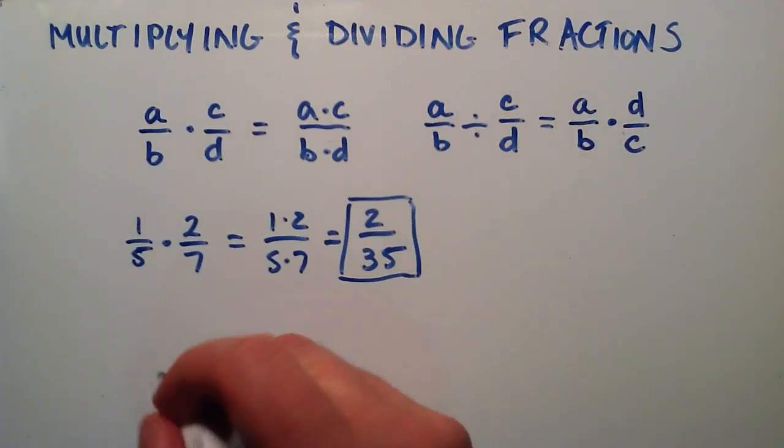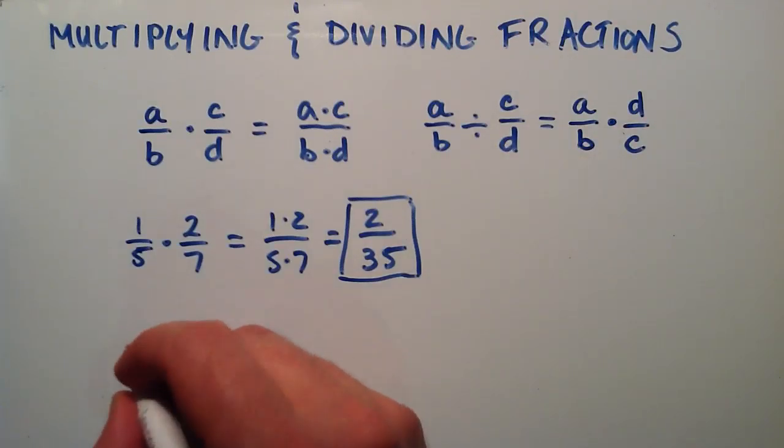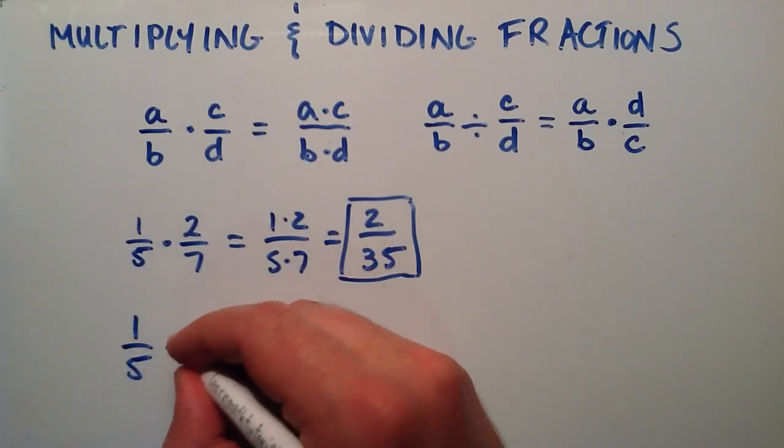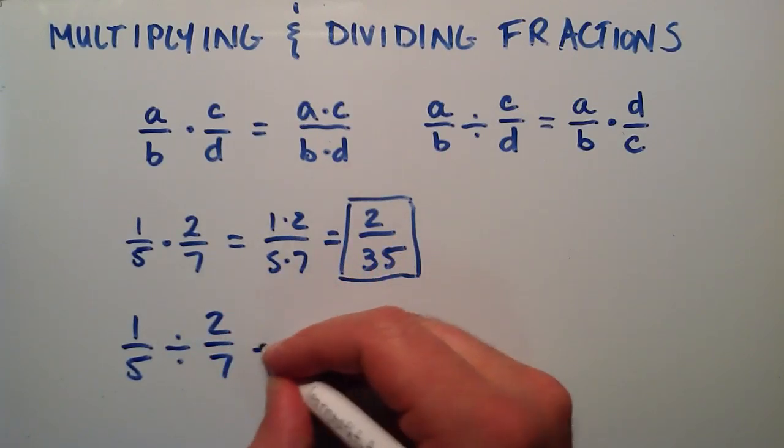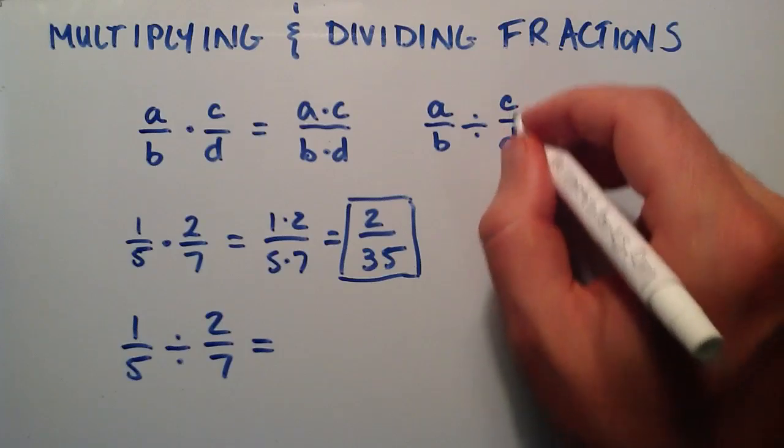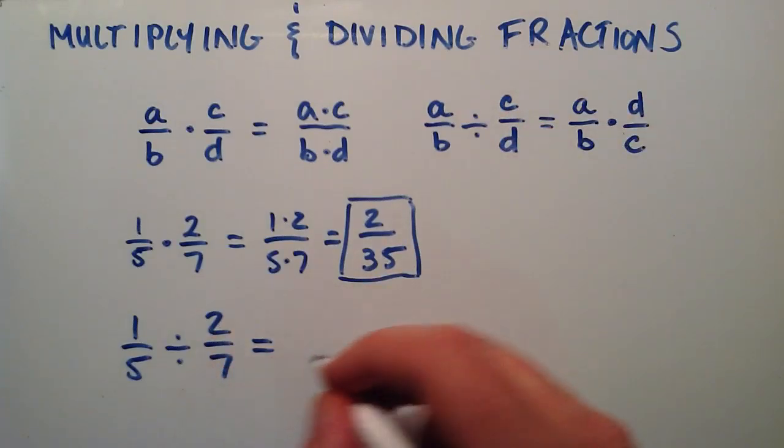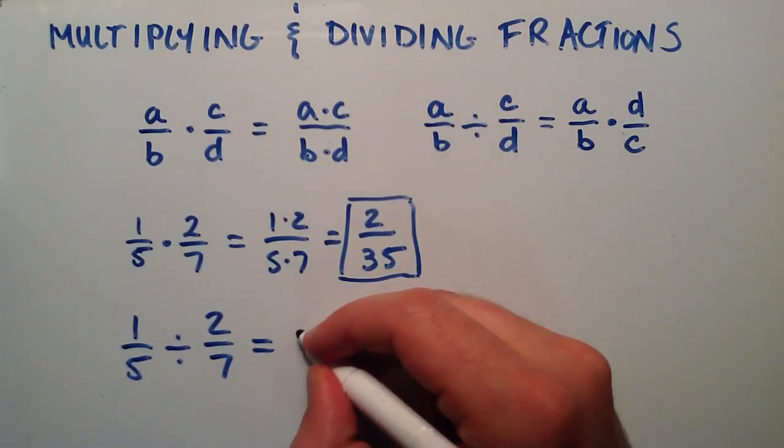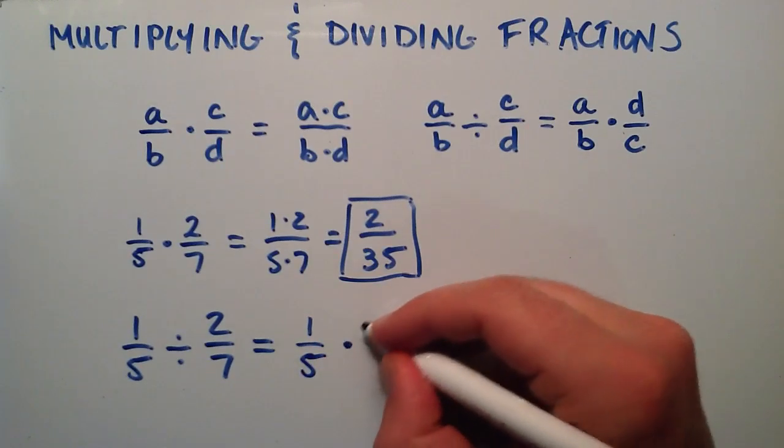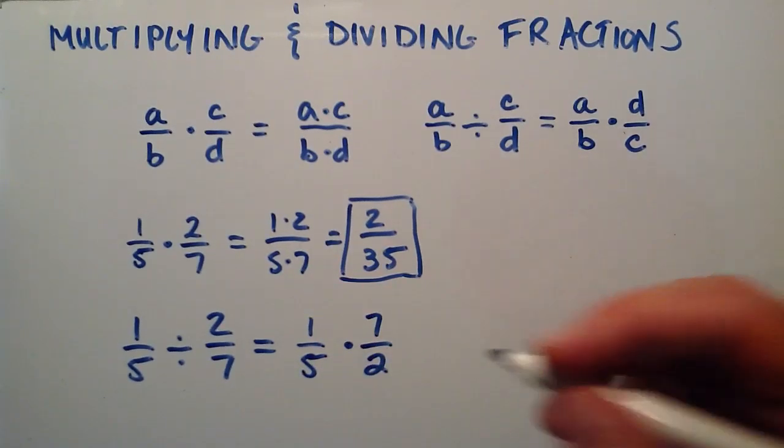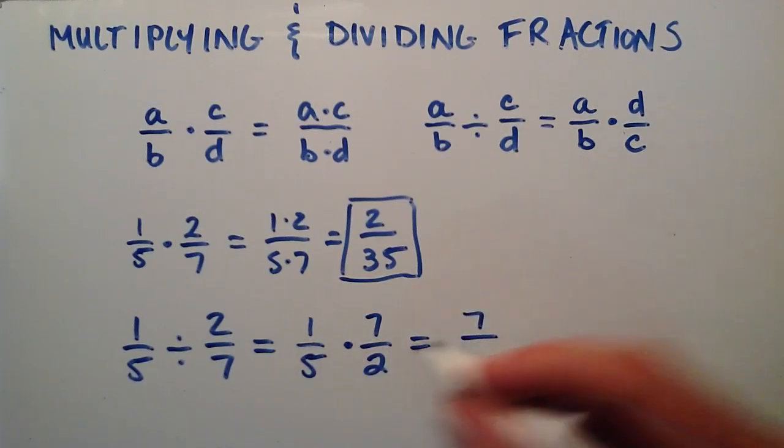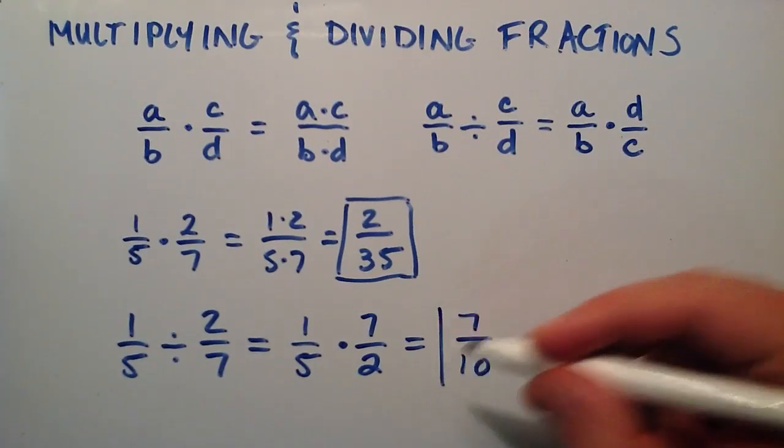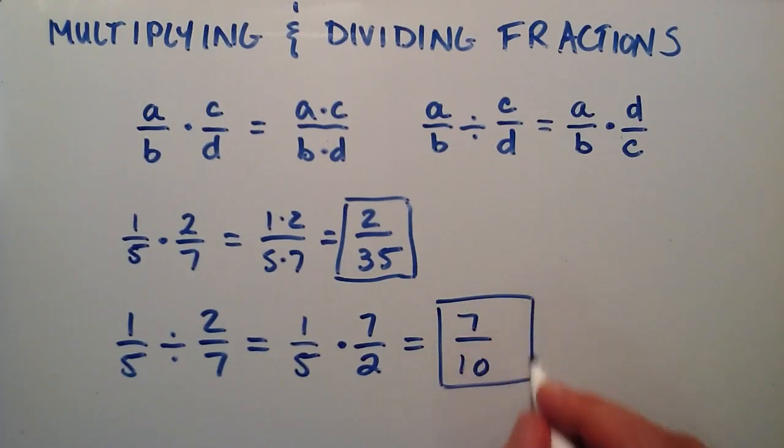Now, let's go ahead and divide. Let's say we have 1 fifth divided by 2 sevenths. Well, if this is the case, we simply flip the numerator and the denominator on the second term, and we write it as a multiplication problem. So this becomes 1 fifth times 7 over 2. And 1 times 7 is 7, 5 times 2 is 10, and we get the answer, 7 divided by 10.